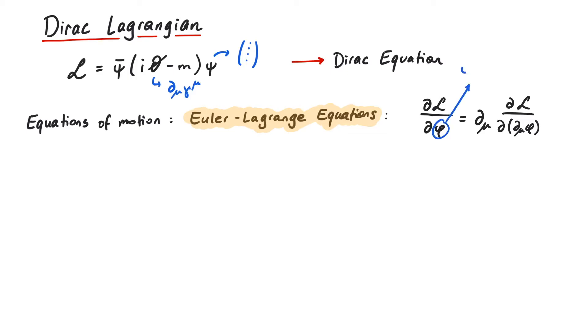First off, which psi do we choose? Psi or psi bar? The correct answer is both of them, but separately. Since the spinner has complex entries, we should actually do one Euler-Lagrange equation for the real part and one for the imaginary part.